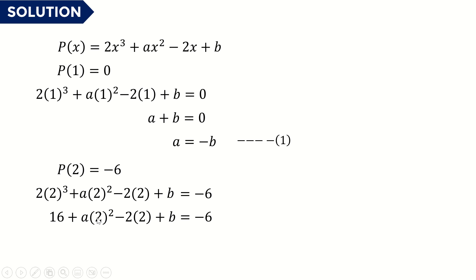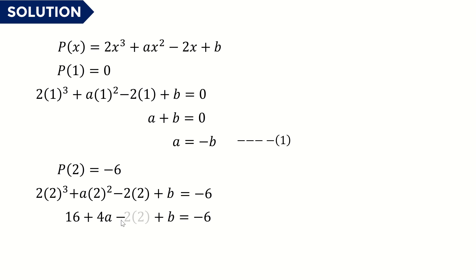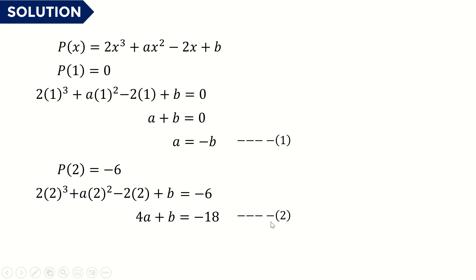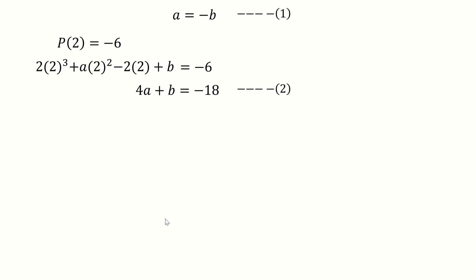Continuing the simplification with x = 2: we have 16 + 4a - 4 + b = -6. Simplifying 16 minus 4 gives 12, and bringing 12 to the right-hand side gives 4a + b = -6 - 12 = -18. This is our second equation.